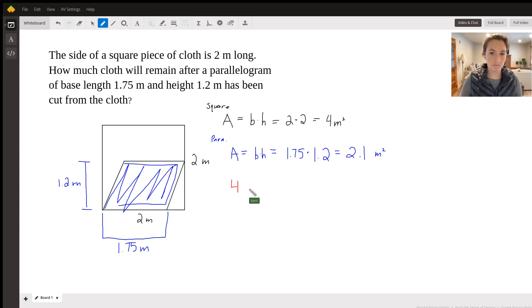minus the parallelogram, which is 2.1. And so you would have 1.9 square meters remaining.